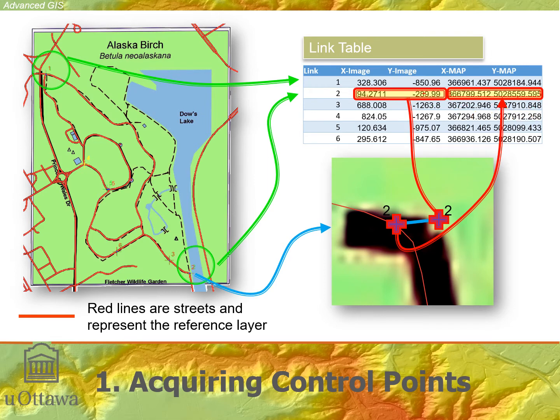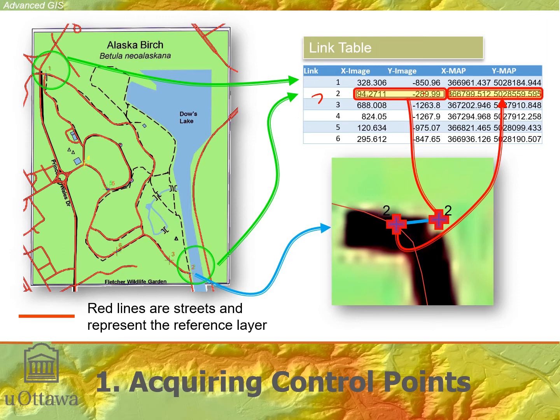We have, in this case, six control points in total. Just below the table is an example of row two, where we have found a point on the real-world reference layer and where it should be on the column and row pixel coordinates of the raster. Notice there's a two and a two right here that represent control point two. These are chosen interactively in ArcGIS Pro to build the link table. Once it's there, ArcGIS Pro will geo-reference the image, meaning it displays it within the real-world coordinate system of the reference layer, which is streets in this case.